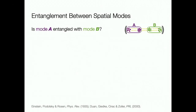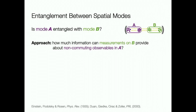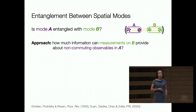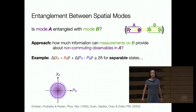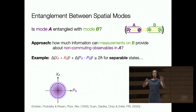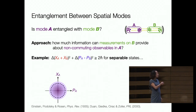We can take this further and ask whether there's entanglement between spatial modes—say, partitioning into left and right ensembles. One way to assess this is to ask how much information measurements on sub-ensemble B provide about the state of ensemble A, and particularly about non-commuting observables. Relying on Heisenberg uncertainty relations: if the state is separable, there's a lower bound on the variance in the sum of the Xs and the variance in the difference of the Ps—I'm calling these two quadratures X and P—requiring their sum to be larger than 2ħ if unentangled.